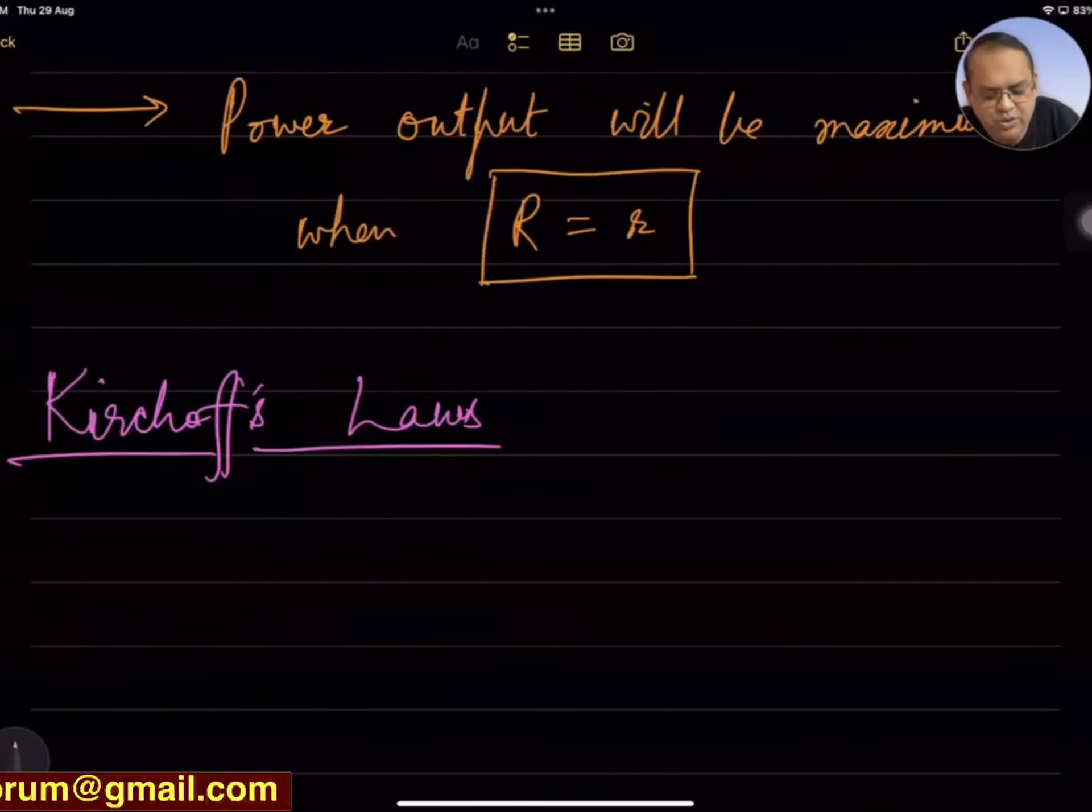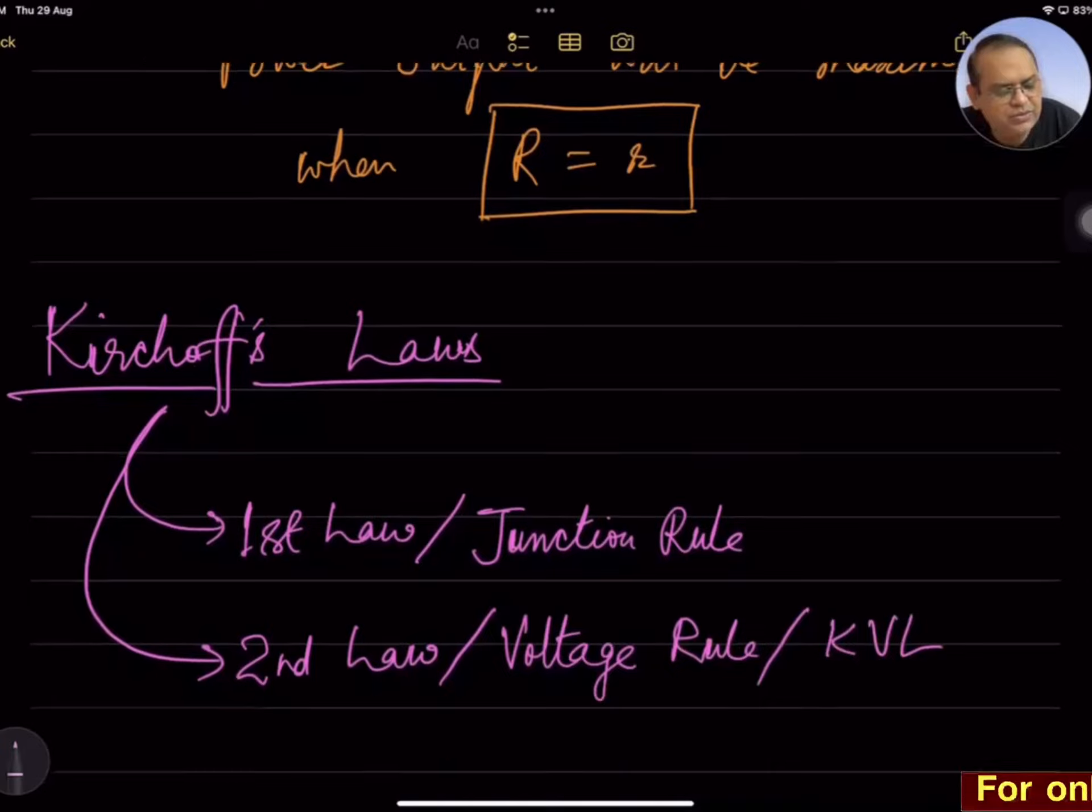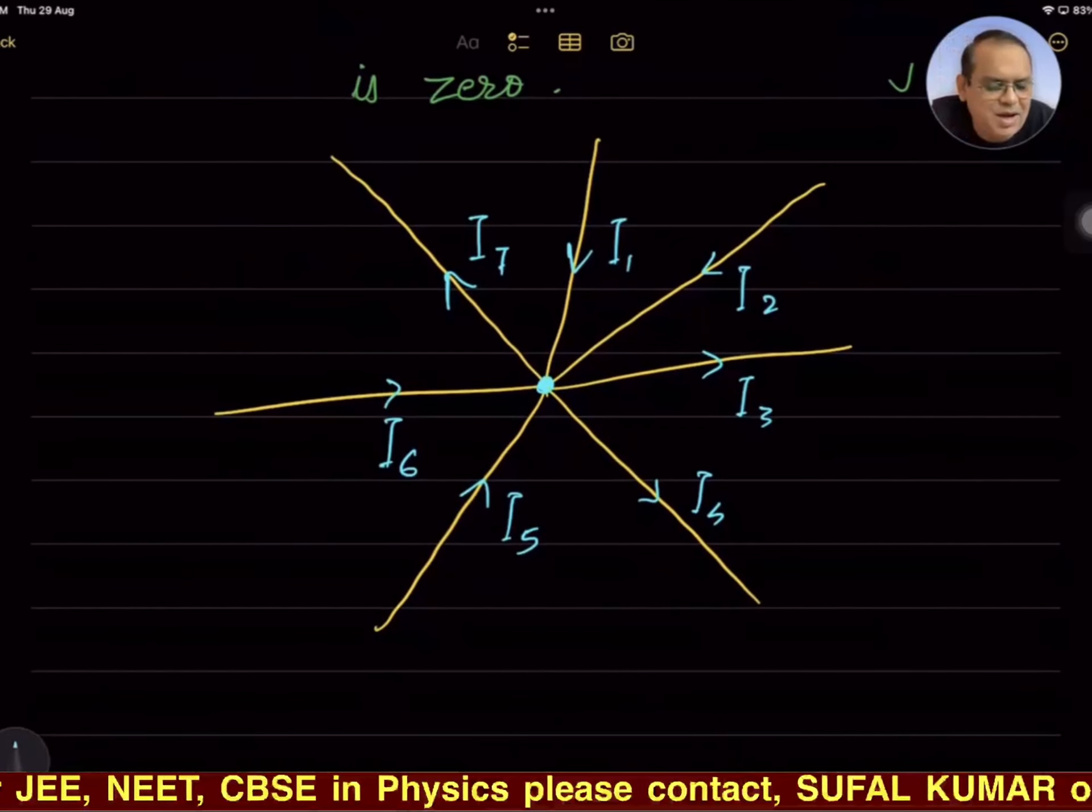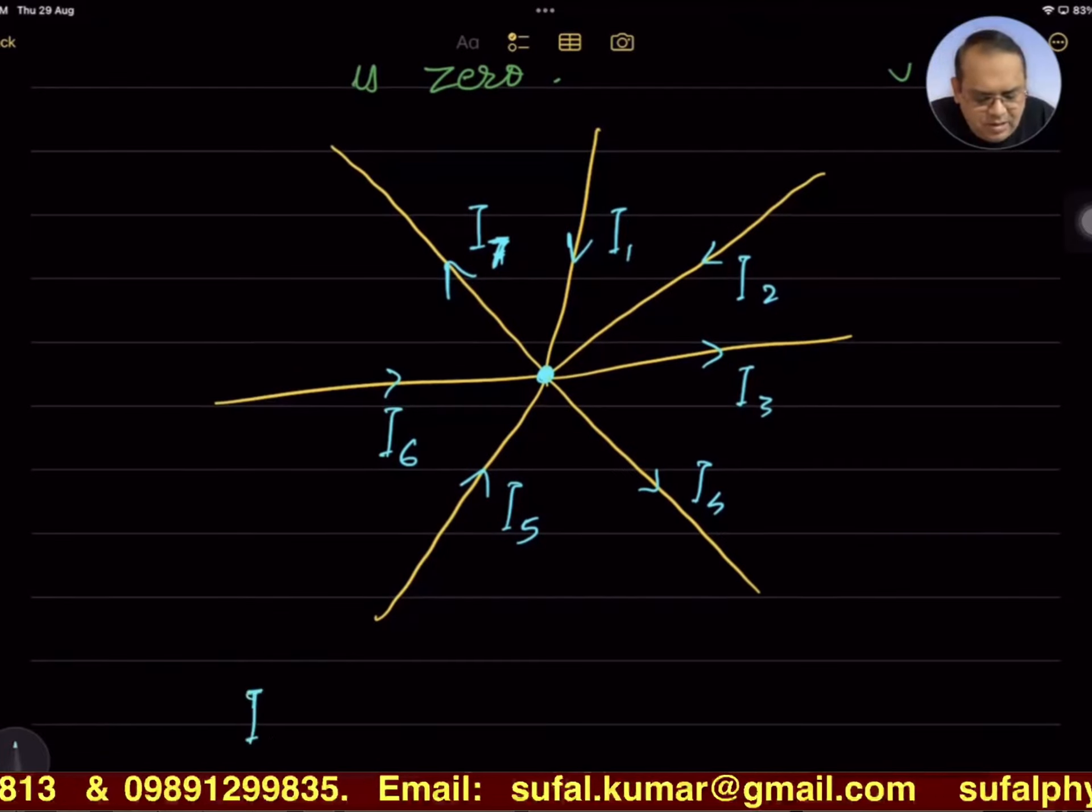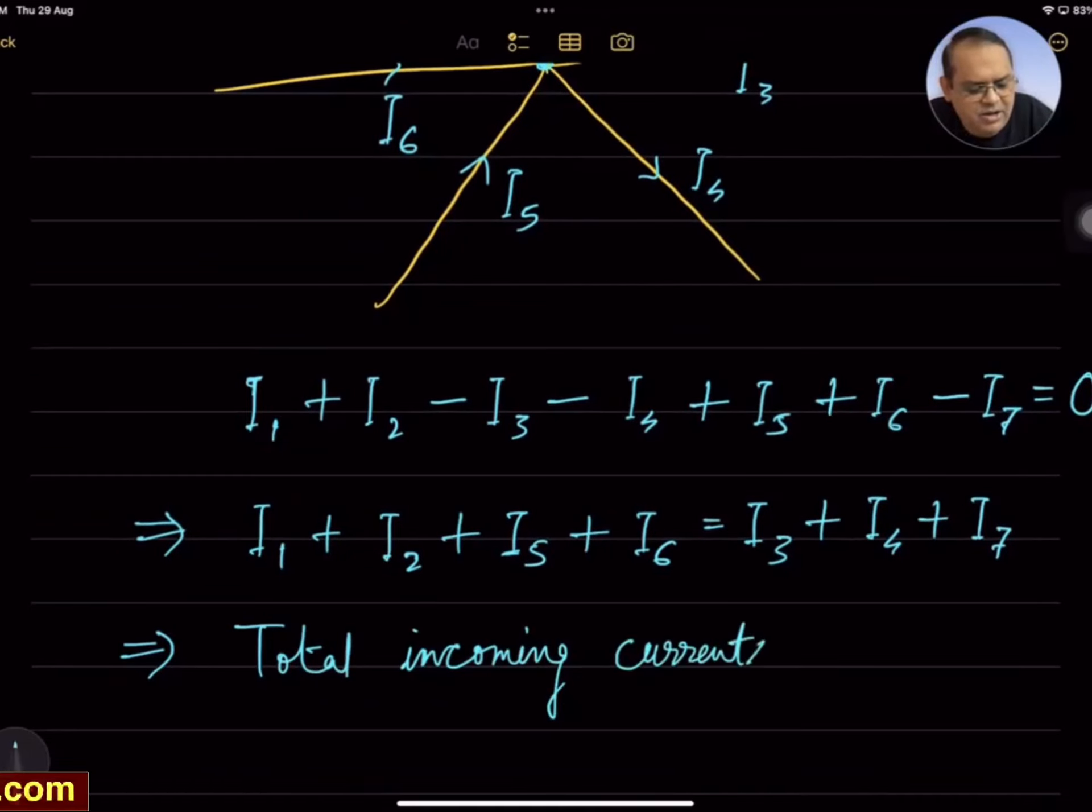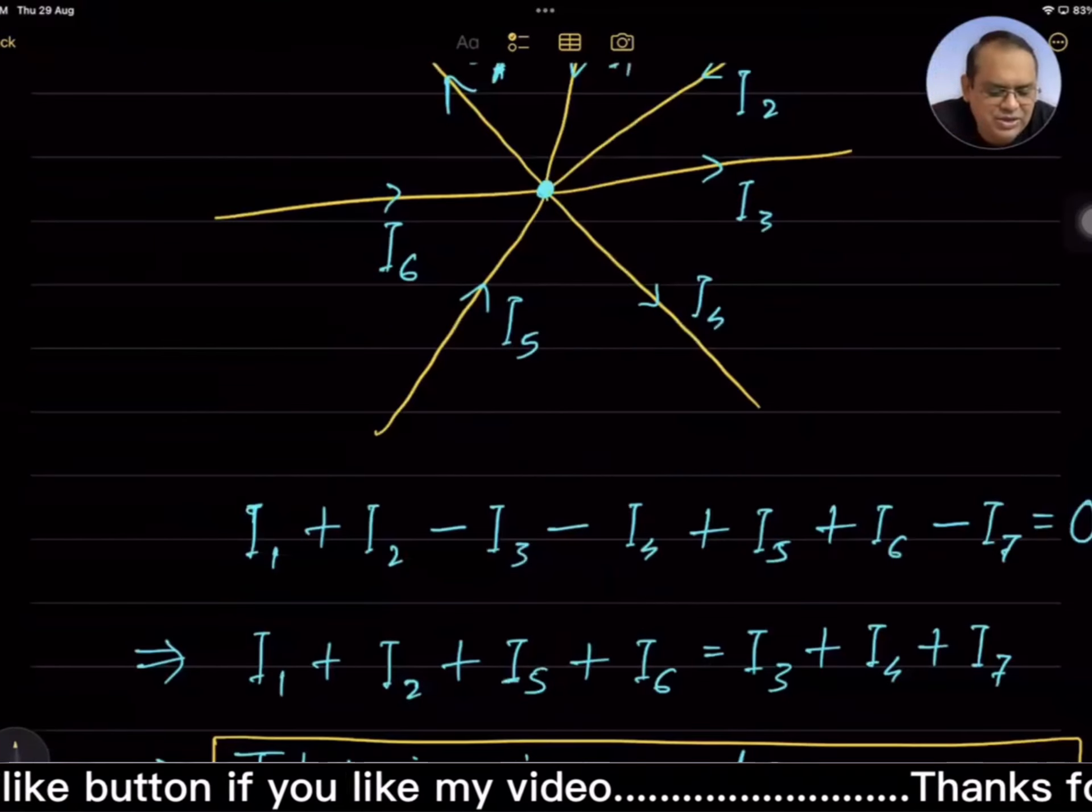Kirchhoff's laws: There are two laws. First law is junction rule, second law is KVL (Kirchhoff's voltage law). Total current across any junction is zero—some are approaching, some are going away. If we consider incoming as positive, then I₁ + I₂ implies that total incoming currents across any junction is zero, or total incoming current equals total outgoing current.